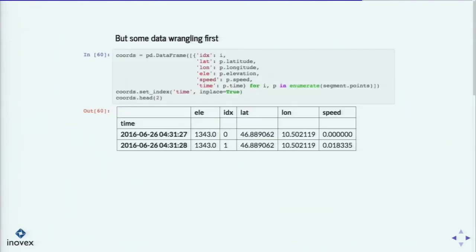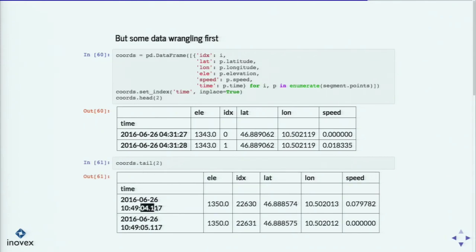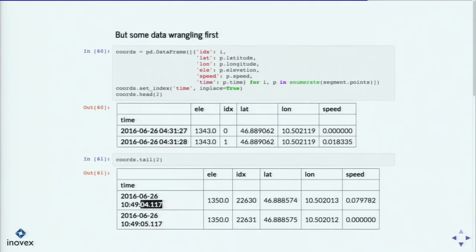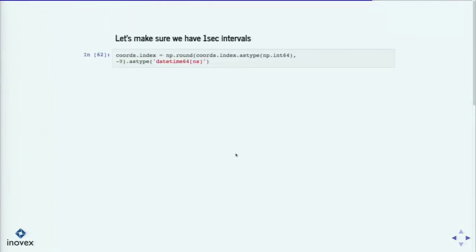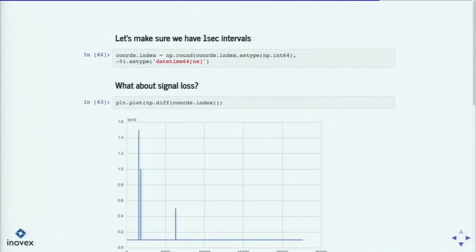But before that, we have to do some data wrangling. Again, we start with a pandas DataFrame of our data. By looking at the tail, I realized it's not really one second as the sampling rate — it's sometimes less than a second. The difference is not always exactly one second. It's really important that the time interval is uniform for this discrete Kalman filter. So I just rounded to the next full second. But what about signal loss? Maybe I had signal loss during my bike ride. We can check that easily by using the numpy diff function over the time index — if the difference of two entries is not one, then there's signal loss. We see we have three instances of signal loss.